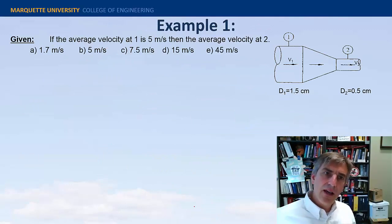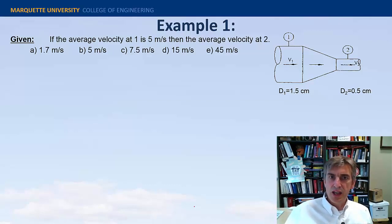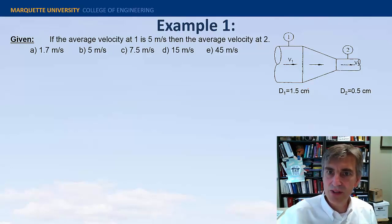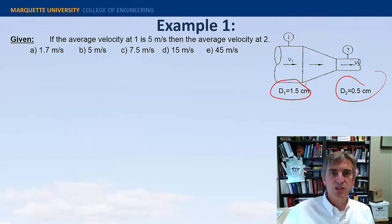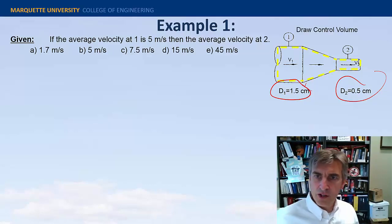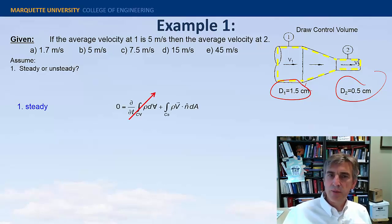All right, let's apply this. If the average velocity at station one is five meters per second, and the average velocity at station two, what is the average velocity at station two? I'm giving you the diameter of stations one and station two, and you have a section of things to choose from there. The first thing we've got to do is draw the control volume, and this seems kind of like it's not necessary, but really get in the habit of doing that. Let's assume steady or unsteady flow. I think we could assume steady flow. What that does for us is gets rid of that term right there.